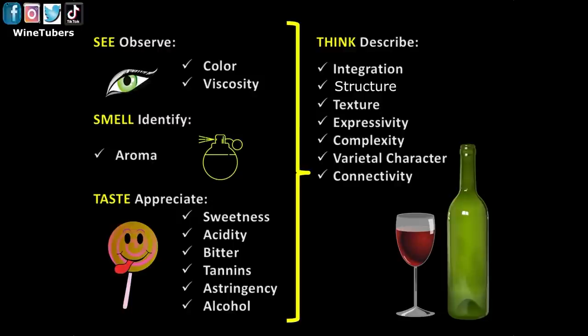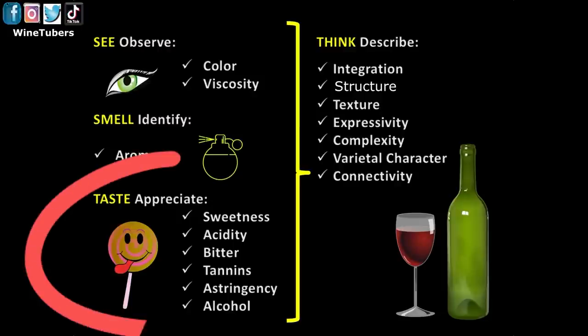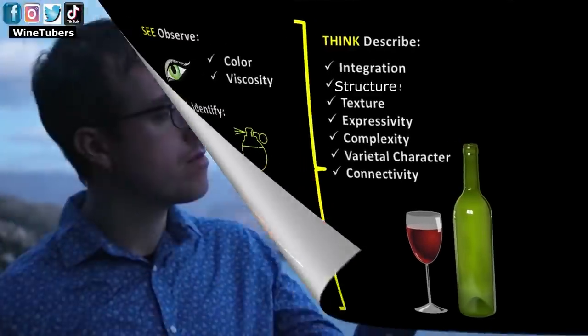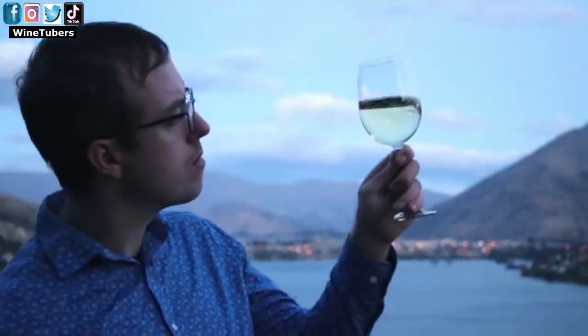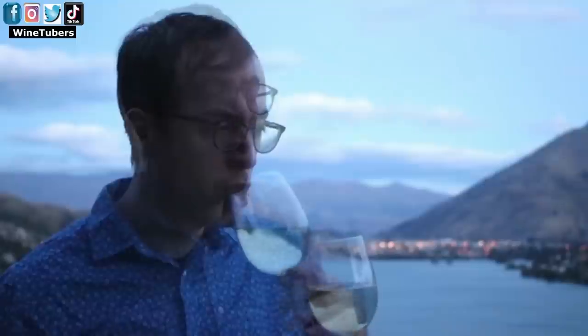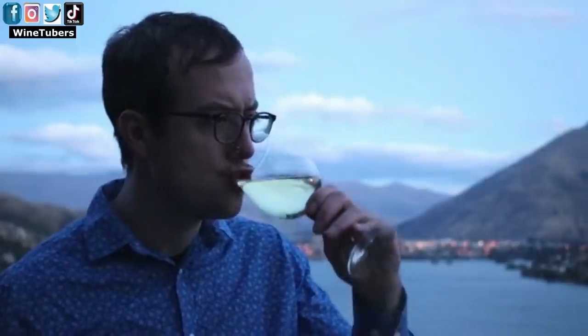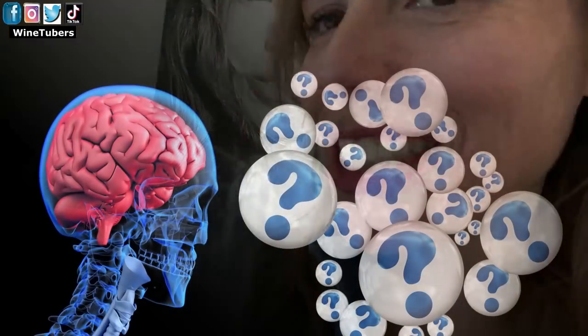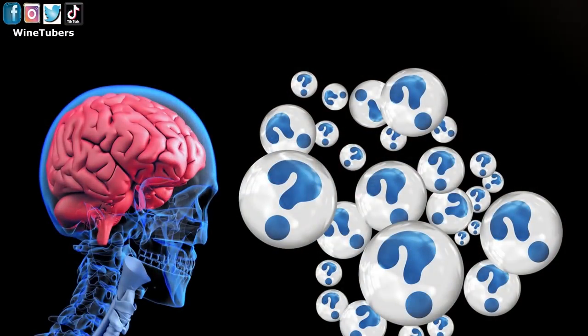Let's taste the wine. We finally go to the part we like and enjoy the most. After observing the colors and appreciating the aroma, we must sip a little of the wine and distribute it throughout the mouth, making it run through the entire interior, allowing it to contact the surface of the tongue and all the taste buds. Next, we will ask ourselves, what feelings do we have?